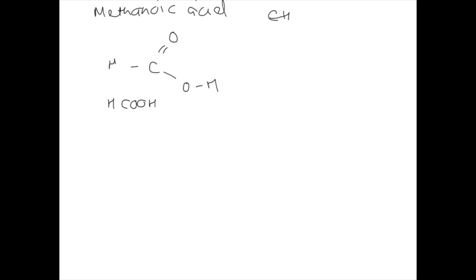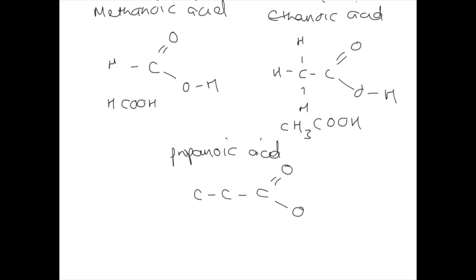Next up, ethanoic acid. That is C to C, let's draw the functional group again and double check the bonds. Okay, the second carbon is happy because it's got four bonds and then I'm just going to complete the first carbon like this. So its formula is CH3COOH. And then for my last example, propanoic acid. That's three carbons, let's draw the functional group, complete the molecule, making sure that carbon has four bonds. Perfect, done.